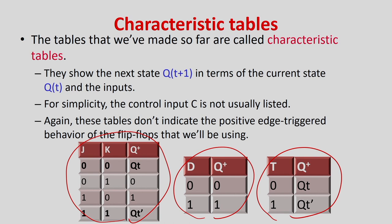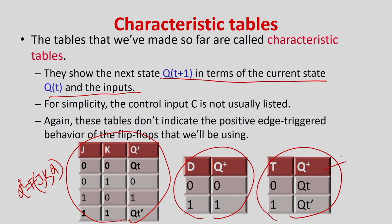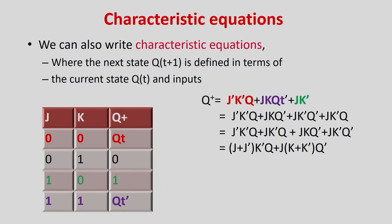The characteristic equation is Q(T+1) in terms of current state and present input. We will try to derive Q-plus as a function of J, K, and Q. We have already derived this in earlier slides. Similarly, Q-plus as a function of input T and Q, and also Q-plus as a function of D and Q.